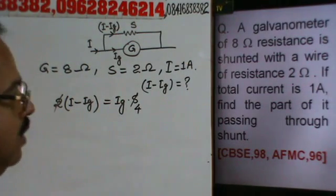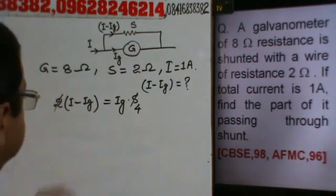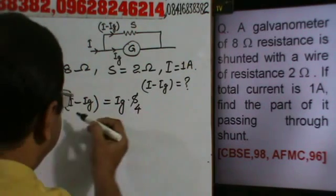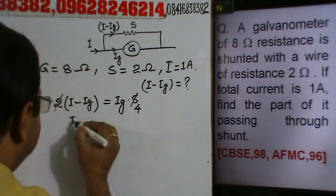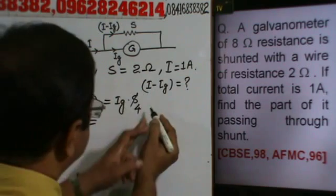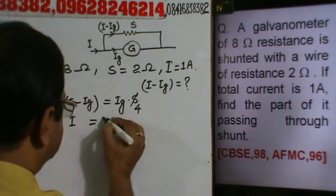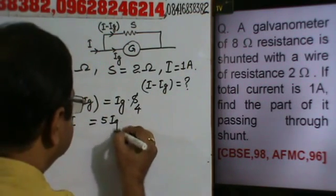Therefore, I will be equal to 4Ig plus Ig. This will be 5Ig, and this implies Ig will be equal to I divided by 5.